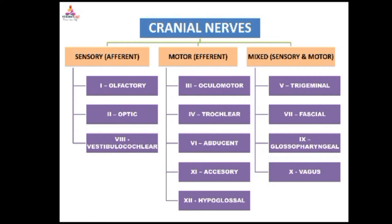Cranial nerves are of three types: sensory (afferent) nerves, motor (efferent) nerves, and mixed nerves containing both sensory and motor fibers. Sensory cranial nerves include the first (olfactory), second (optic), and eighth (vestibulocochlear). Motor cranial nerves include the third (oculomotor), fourth (trochlear), sixth (abducent), eleventh (spinal accessory), and twelfth (hypoglossal). Mixed cranial nerves include the fifth (trigeminal), seventh (facial), ninth (glossopharyngeal), and tenth (vagus).